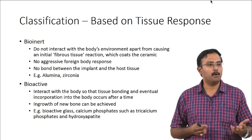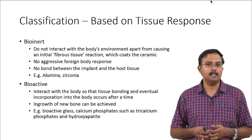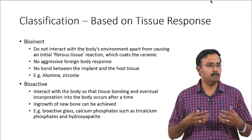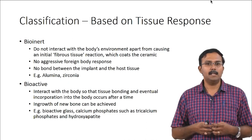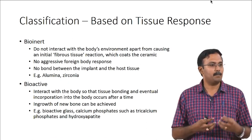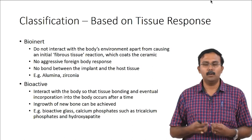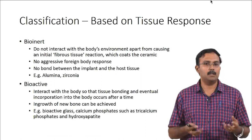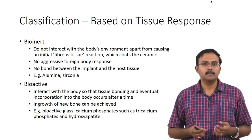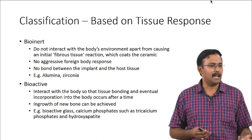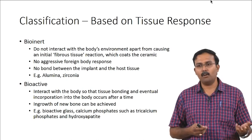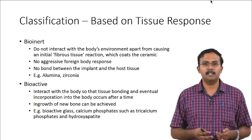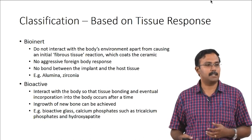Examples of bioinert ceramics are alumina and zirconia. Bioactive ceramics interact with the body so that the tissue actually binds with the ceramic and there is an eventual incorporation of the implant into the body itself over a period of time. Ingrowth of bone can be achieved for these bioactive ceramics. Examples include bioactive glasses, which are nonresorbable, and resorbable bioactive ceramics like calcium phosphates such as tricalcium phosphate and hydroxyapatite.